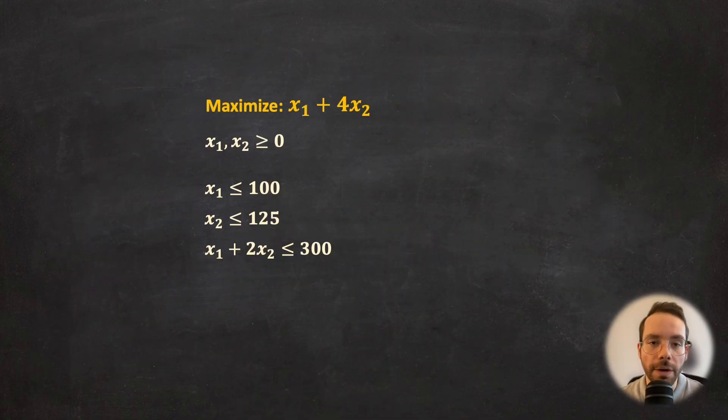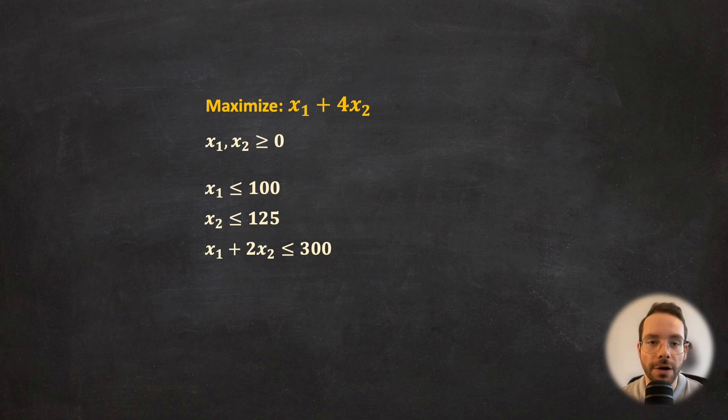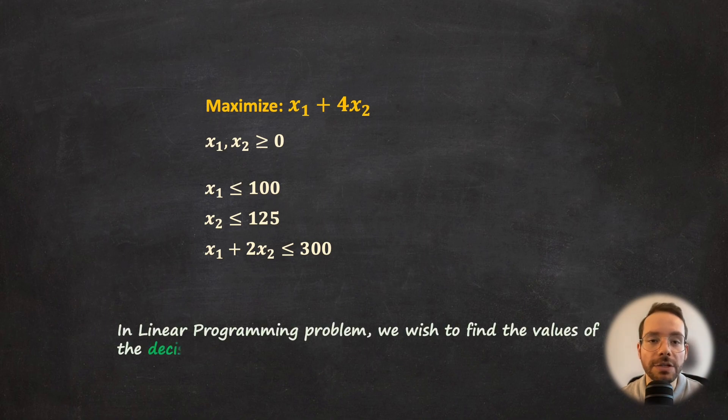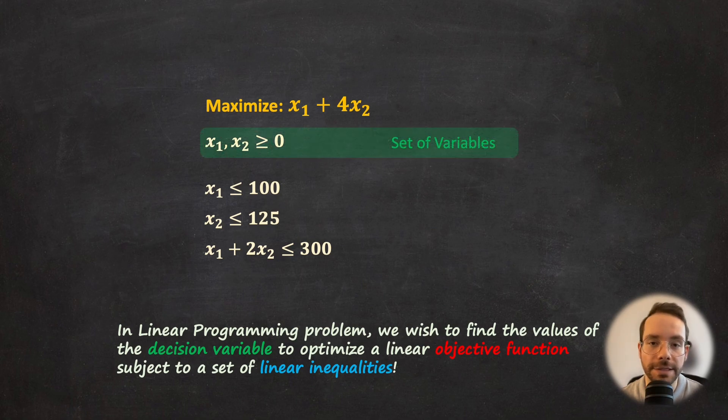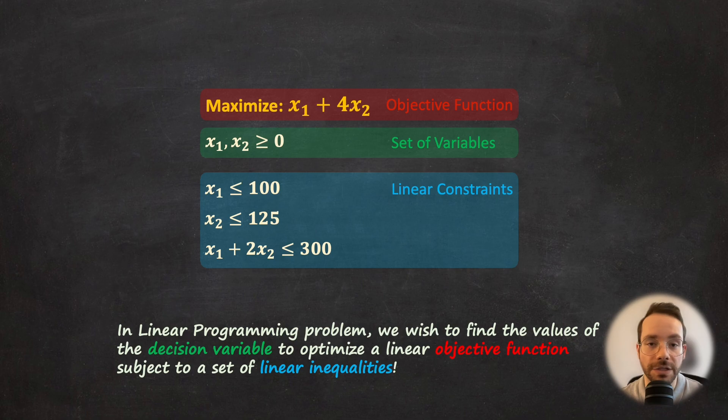Linear programming is an optimization technique for a system of linear constraints and a linear objective function. So everything is linear here. That's why it's called linear programming. The goal of linear programming is to find the values of decision variables that maximize or minimize the objective function, given a set of linear constraints.